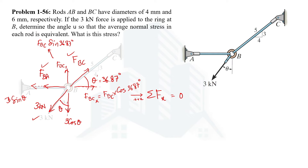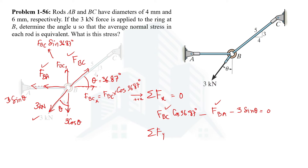The horizontal component of FBC is FBC cos 36.87, and the vertical component is FBC sin 36.87. For the first condition of equilibrium, the rightward force is FBC cos 36.87; FBA is on the negative side, and the horizontal component of the 3 kN force, 3 sin theta, is also on the negative side, equal to zero. Since this equation has two unknowns, we move to the second condition of equilibrium — summation of forces in the y-direction equal to zero, taking upward as positive. This gives FBC sin 36.87 minus 3 cos theta equal to zero.